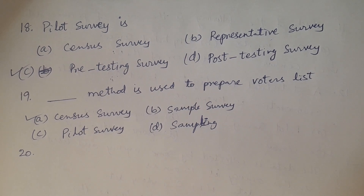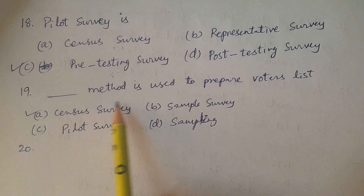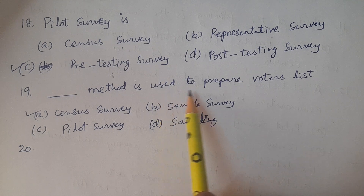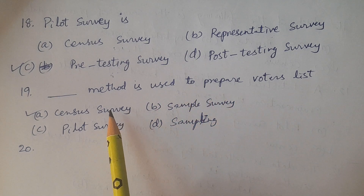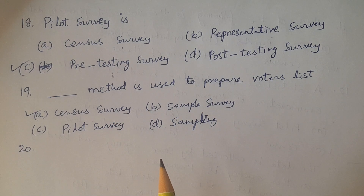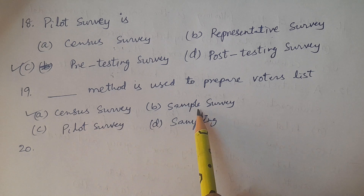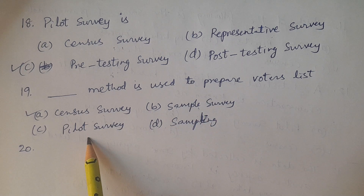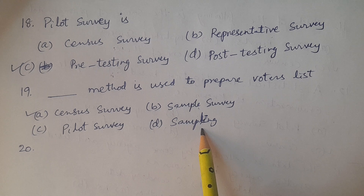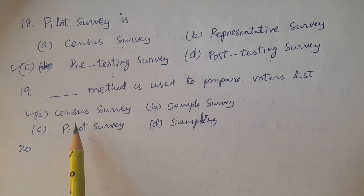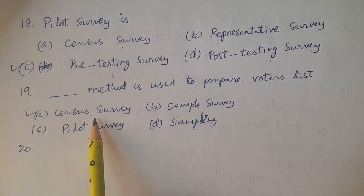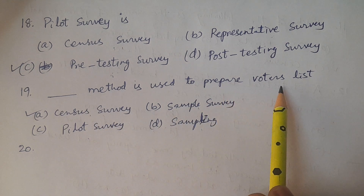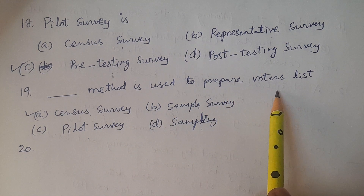19th bit: Which method is used to prepare the voters list? Options: A. Census survey, B. Sample survey, C. Pilot survey, D. Sampling. The answer is Census survey. It is the best and one of the most important surveys used to prepare the voters list.